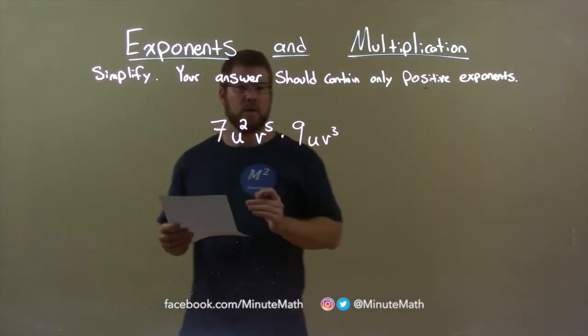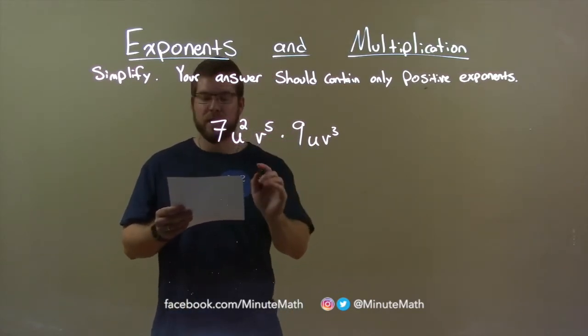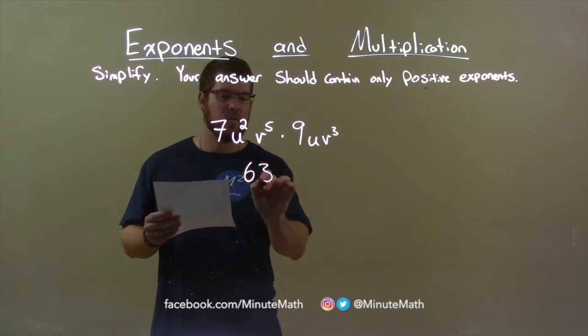Well, first thing I want to do is I look at the coefficients and I multiply them. 7 times 9, we have 63 here.